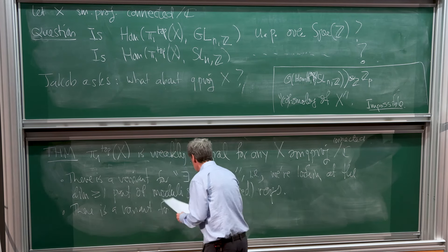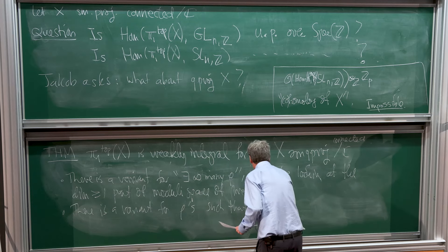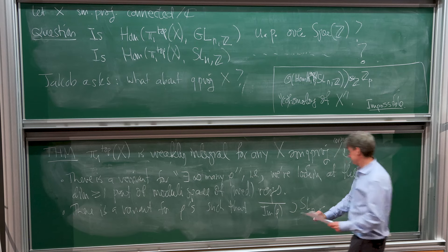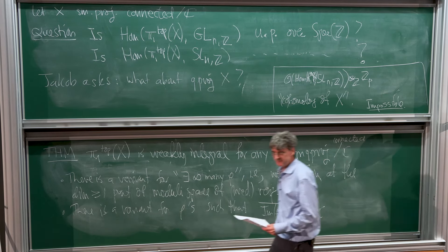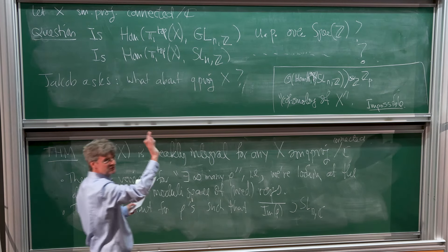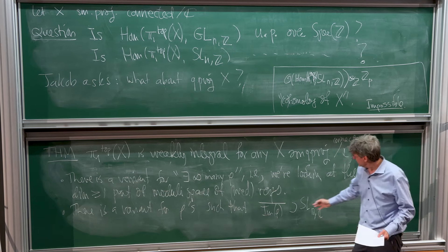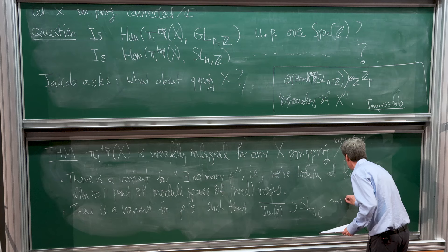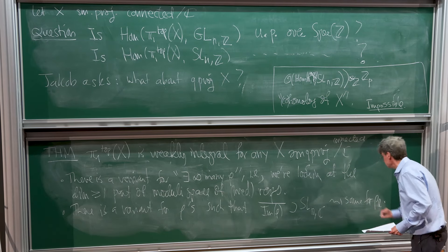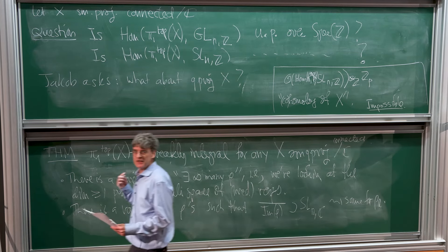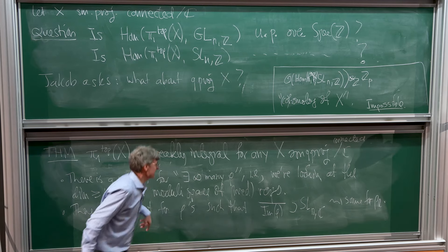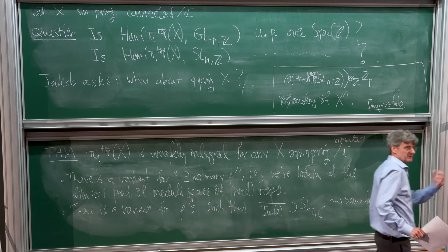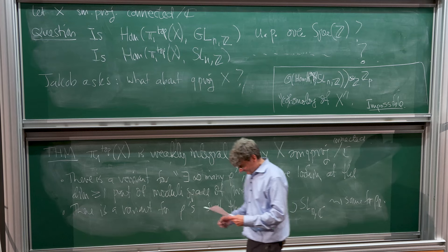There's another variant for rho such that when you take the image of rho and take the Zariski closure, this would contain SLN of C. These rhos have finite order determinants, so they're not Zariski dense in GLN, but they can be Zariski dense in SLN. Then the conclusion is the same for rho L. This is a tiny bit of extra stuff where you can produce rho Ls with the same property.